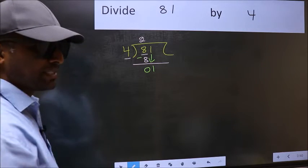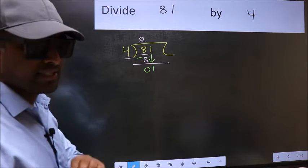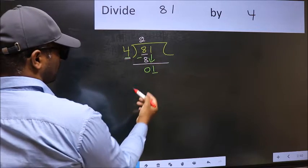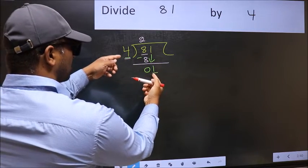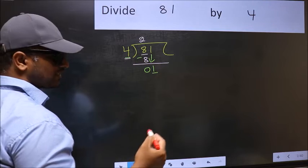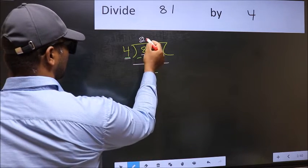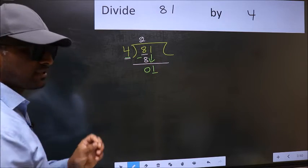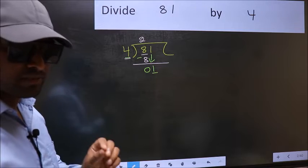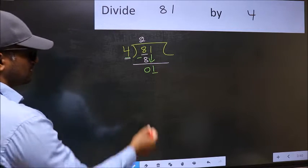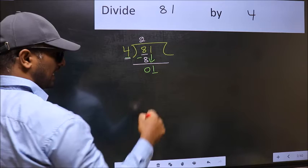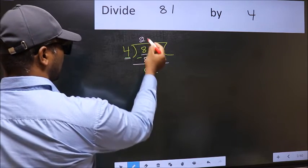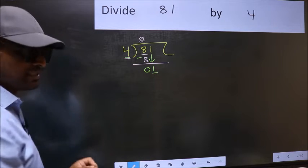After this step, the mistake happens. And the mistake is this: here we have 1 and here 4. 1 is smaller than 4. So what many do is, they directly put a dot and take 0. Which is wrong. Why is it wrong? Because just now you brought this number down, and in the same step, you want to put a dot and take 0. Which is wrong.